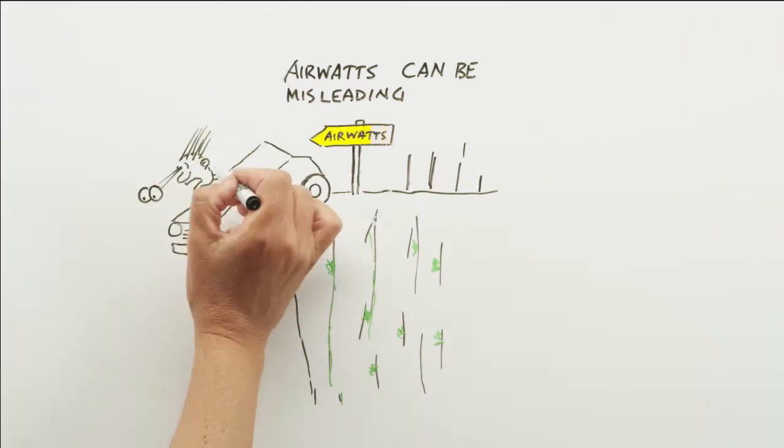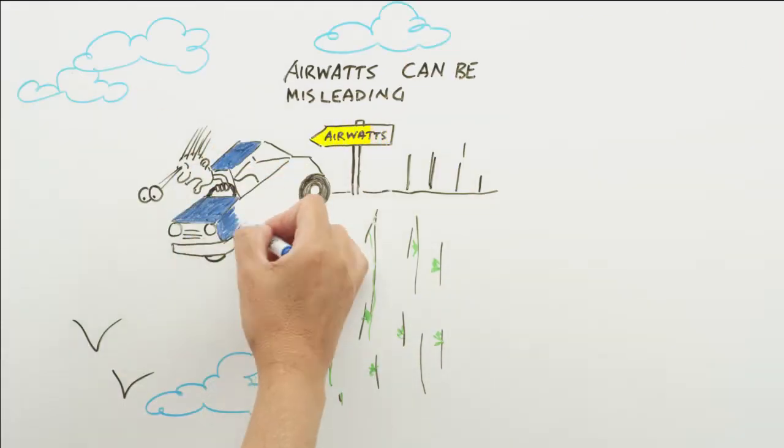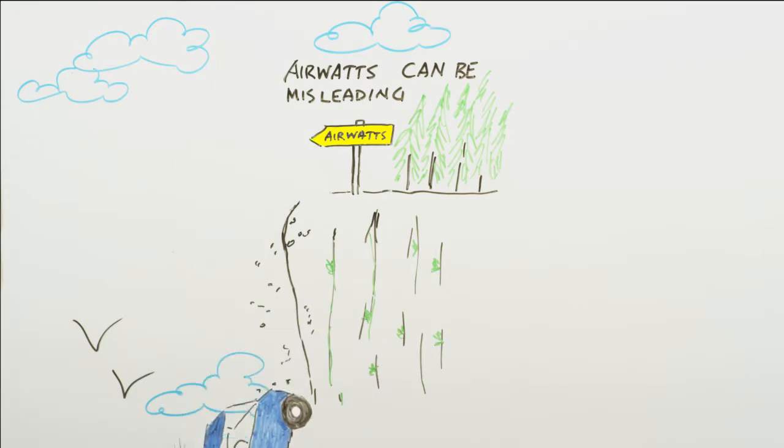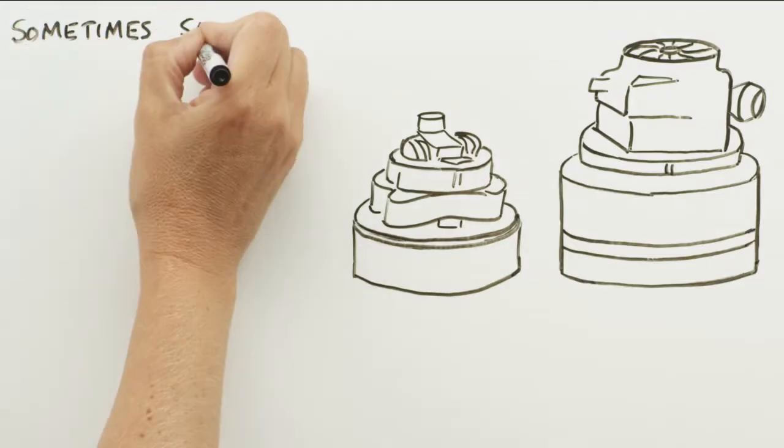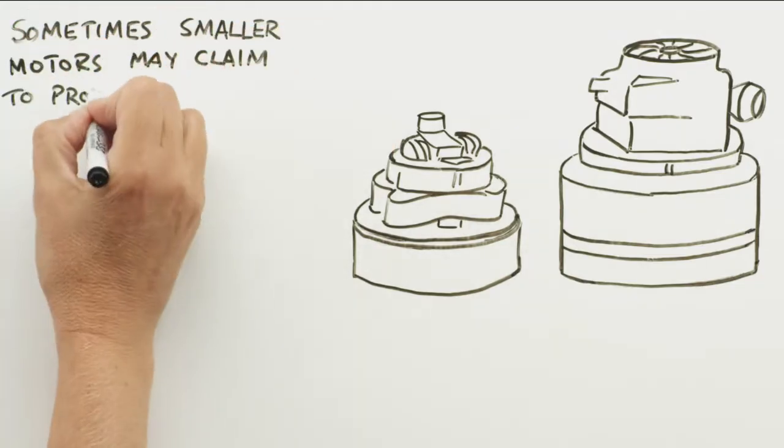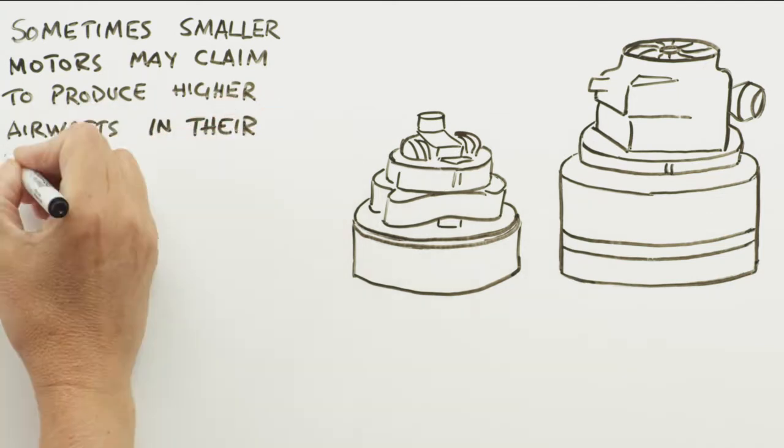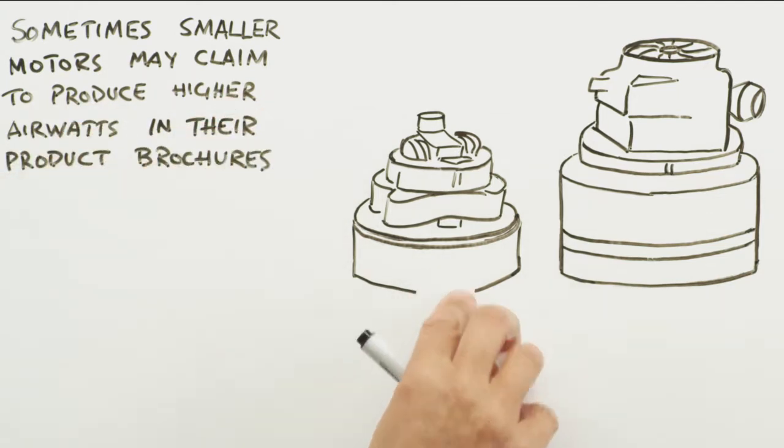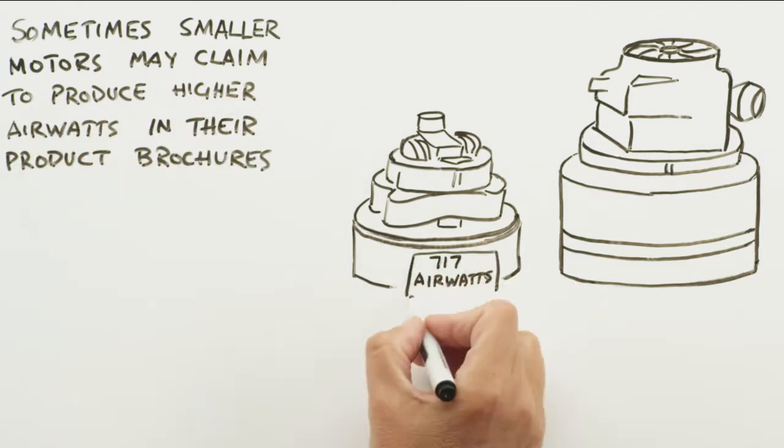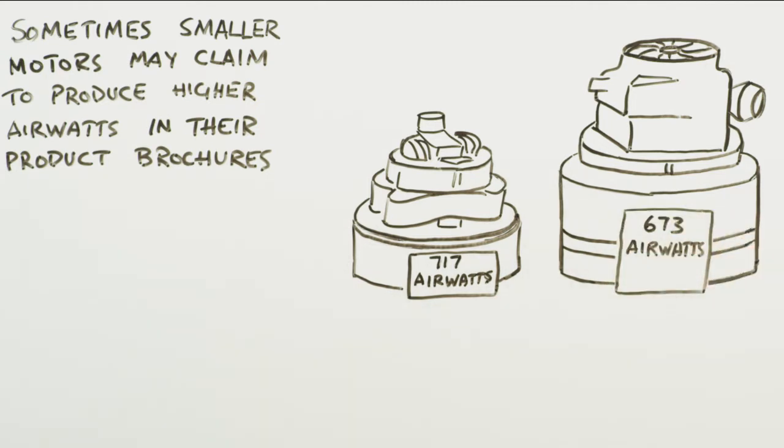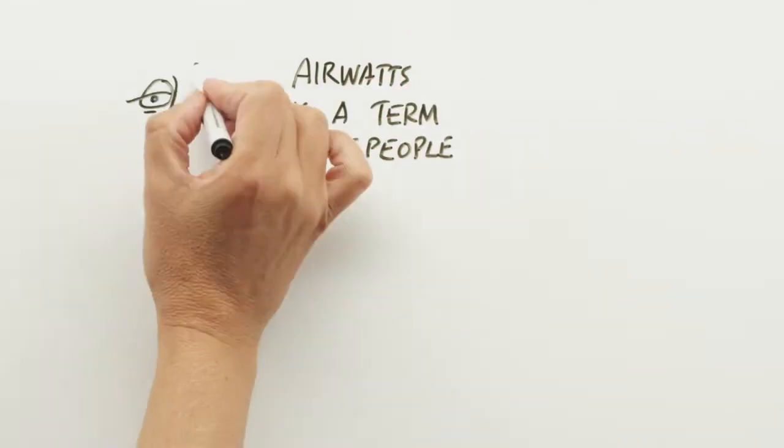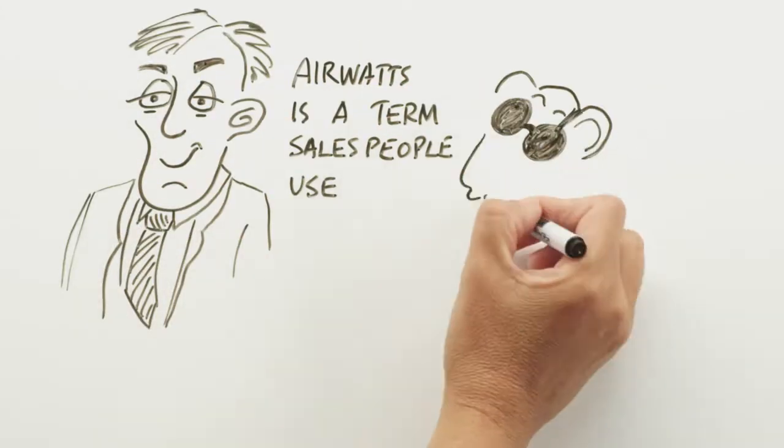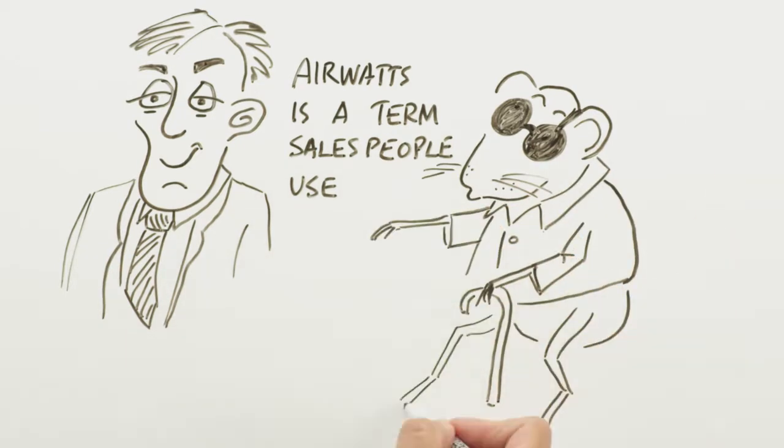However, airwatt measurements can be misleading. Sometimes smaller motors may claim to produce higher airwatt in their product brochures. But brochure airwatt are measured at the motor and not at the end of the hose. This measurement has nothing to do with vacuum cleaner performance. Simply put, airwatt is a term salespeople use to blind customers.